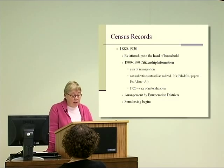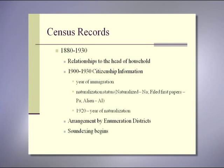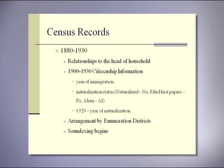Beginning in 1880, they list the relationship to the head of the household. Starting in 1900, it also provides citizenship information: the year of immigration, naturalization status — whether naturalized (NA), filed first papers (PA), or alien (AL). In 1920 it gives the year of naturalization. Records are also arranged by enumeration districts — areas within the county that an enumerator could cover in two weeks or one month depending on whether they're in the city or the country. Also in 1880, for the first time, it lists in cities the name of the street and house number.